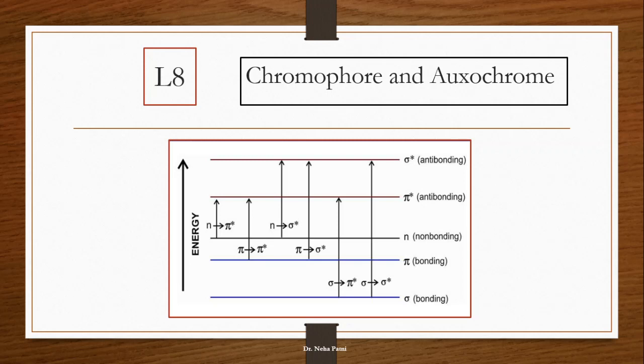Like alkenes and alkynes, those unsaturated compounds show that pi to pi star transition. And at the same time it could be C double bond O, wherein you have a non-bonding orbital and at the same time you have unsaturation.